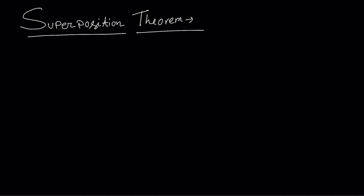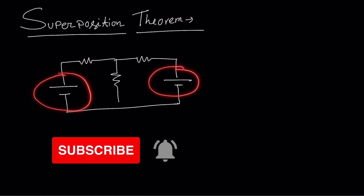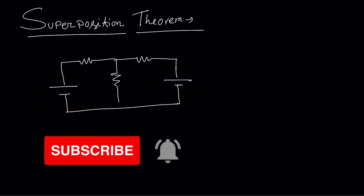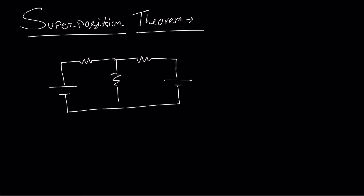Today our topic is the superposition theorem. Superposition theorem states that in a linear circuit containing multiple independent sources — here you can see we have two independent voltage sources — the response of voltage or current across any element can be determined by considering the individual contribution of each source separately while the other sources are turned off.